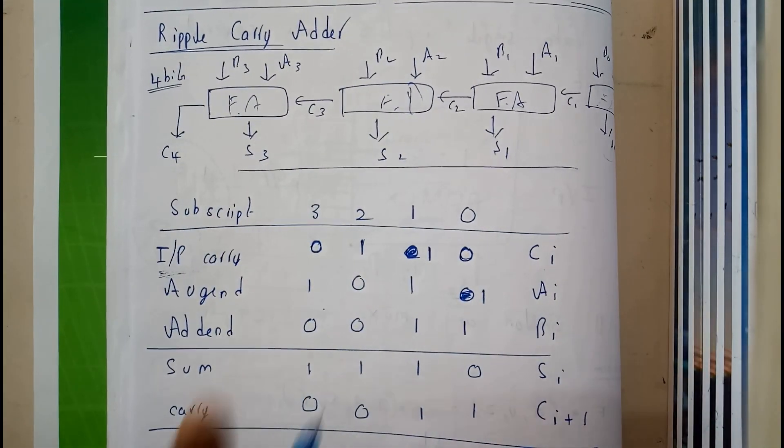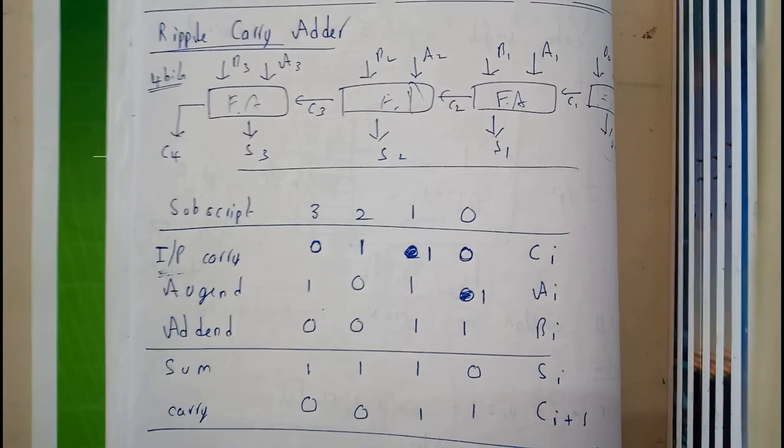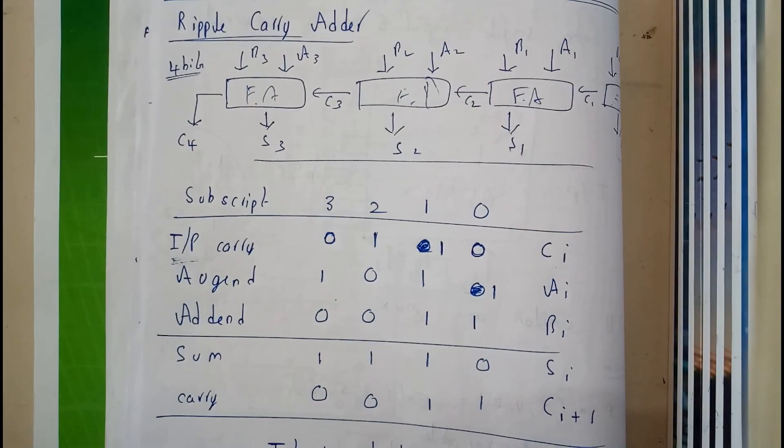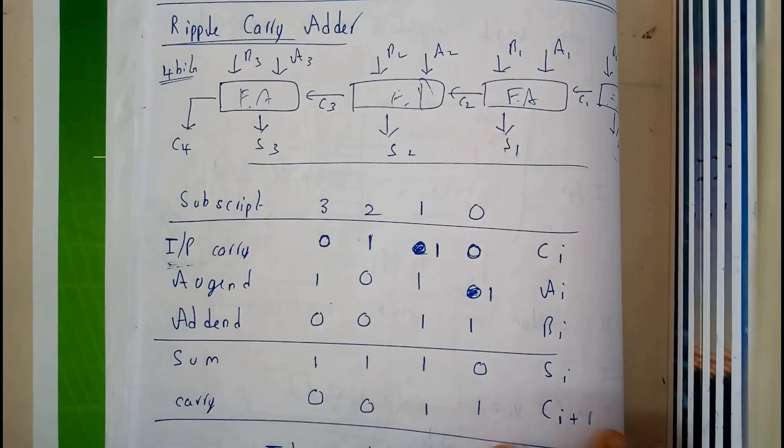So I have just took these arguments, some random values, I have just took them randomly. I took 1 0 1 1 and 0 0 1 1. So now I am trying to do sum and carry.